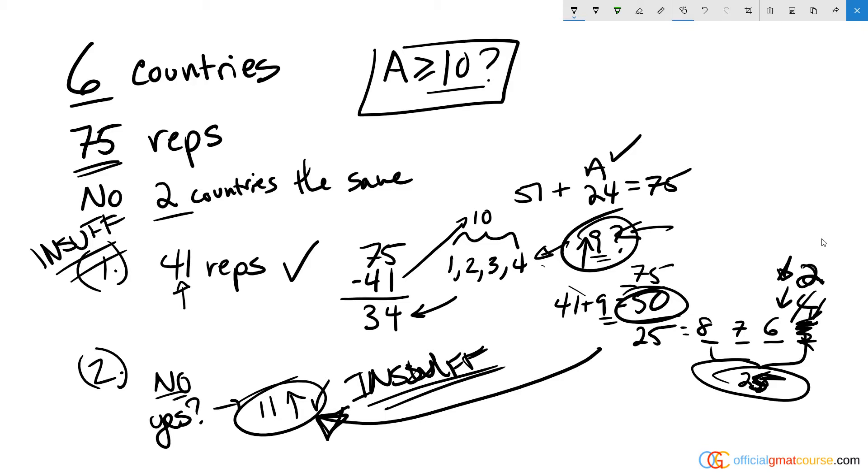or rather we ended up with 52 reps. So we only needed 23 reps from these four parties, but we were still using this 41 for the greatest number, which is all that statement one gives us. So I'm going to say these two do not add value to the process we've already gone through. And that means that this is still insufficient when taken together, which means our answer is actually E.